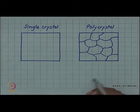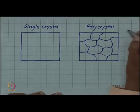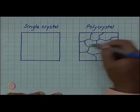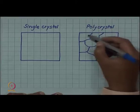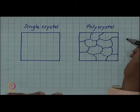But the real crystalline material are mostly polycrystalline, that is the orientation of the unit cell changes from region to region.